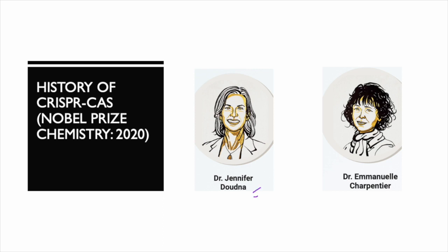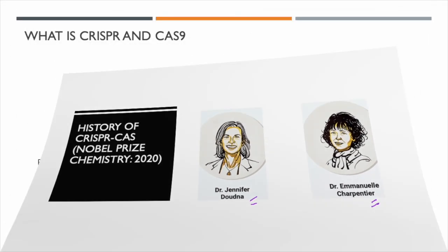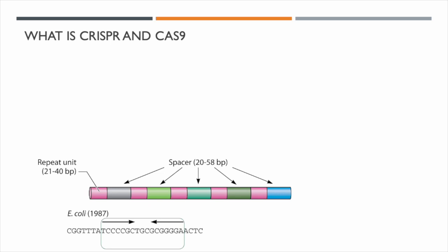The Nobel Prize was won by Dr. Jennifer Doudna and Dr. Emmanuelle Charpentier. Before moving ahead, we should understand what CRISPR and Cas9 mean. CRISPR stands for Clustered Regularly Interspersed Short Palindromic Repeats. The term palindrome refers to sequences which read the same in the 5' to 3' direction on both strands, and you will see an example of that shortly.